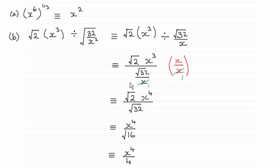Now what I've got here is a stacked fraction. I don't like the idea of turning upside down and multiplying — it's not really that mathematical. What we're doing is multiplying the fraction by 1 in the form of x over x, because it eliminates this x, it cancels out. So that leaves us with root 2x cubed times x, which is root 2x to the 4, all over root 32.